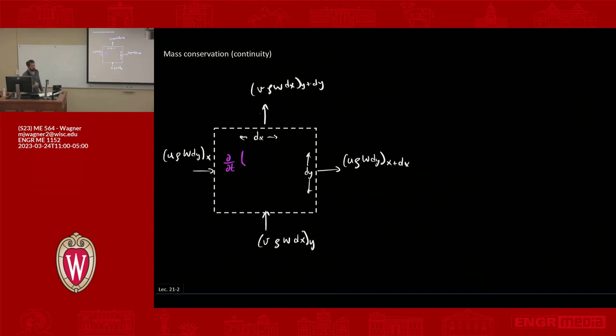That's going to be the volume times the density. So the volume is w dx dy times ρ, that gives me my mass. So the rate of change with respect to time of that mass. Anything else? I think that's it, no other places where mass could be stored or in or out.